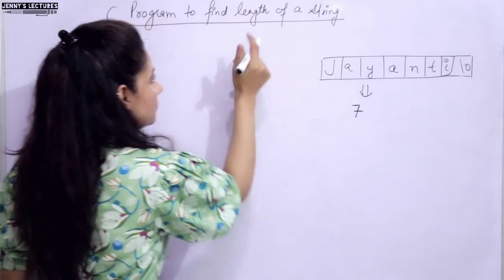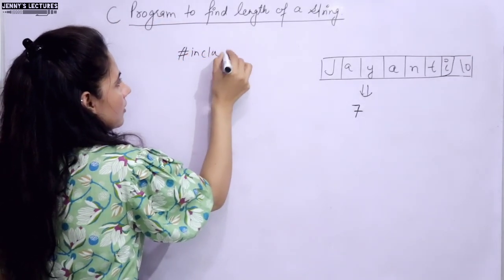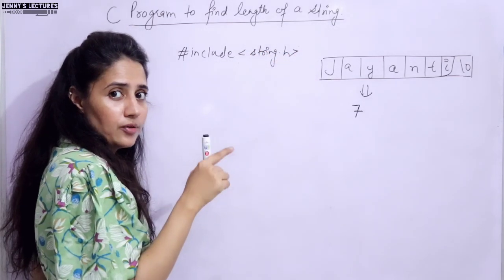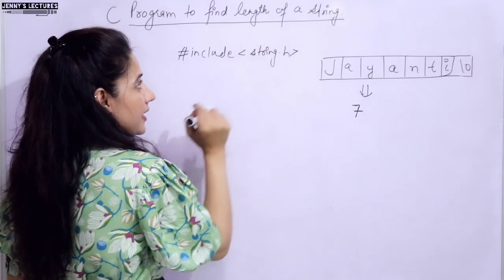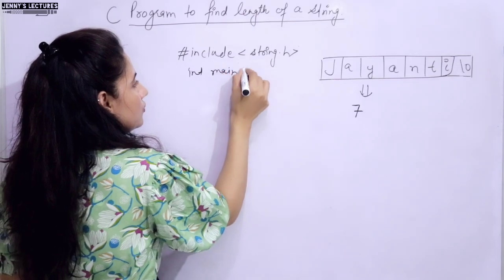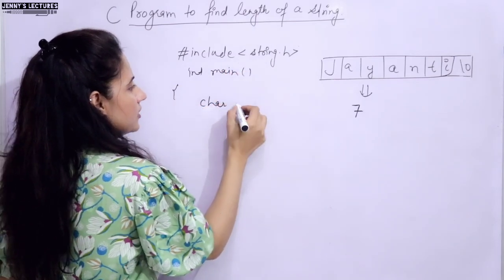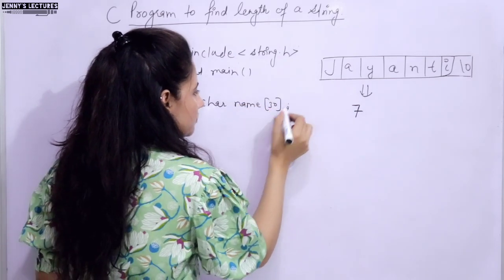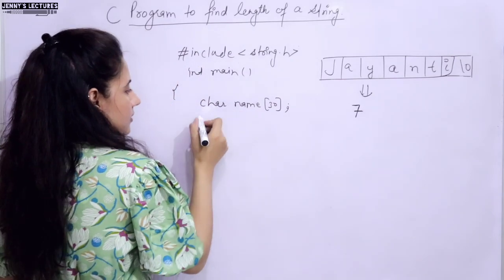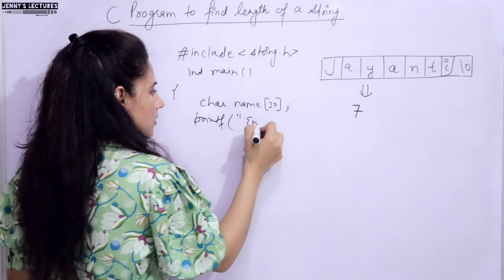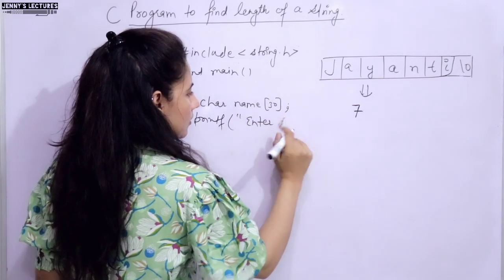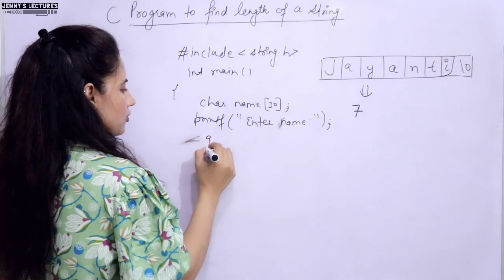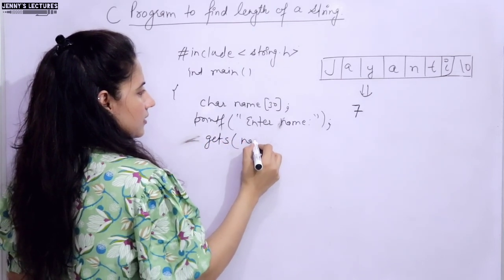First of all we include the header file string.h, because the strlen function is declared there. Then we declare a string - char name with length 30. When the program runs it should ask 'enter name', and we'll read input using gets - gets(name).